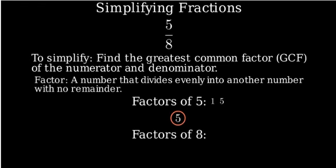Now, let's find all the factors of 8, our denominator. 1 is always a factor, 2 is a factor because 8 divided by 2 equals 4, 4 is a factor because 8 divided by 4 equals 2, and 8 itself is a factor.